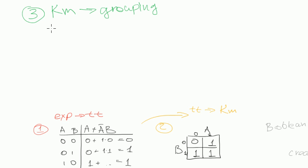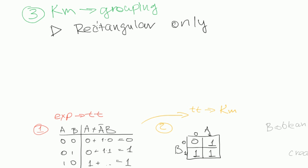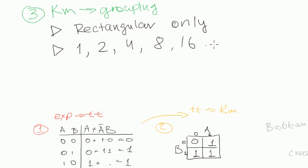So the rules are the following. First one: groups should be rectangular — rectangular only. Next rule: groups should consist of 1 cell, or 2 cells, or 4, 8, 16 and so on. That's how many cells can be in one group, and as you can see it's the powers of 2 — so it's 2 to the power of something.